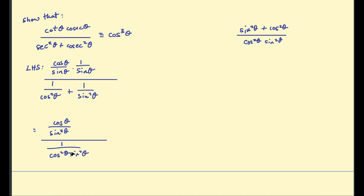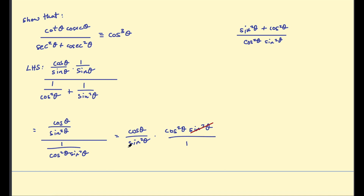Since sin²θ + cos²θ = 1, the denominator becomes 1 over (cos²θ · sin²θ). When you divide two fractions, flip the denominator and multiply. This gives (cosine θ / sin²θ) multiplied by (cos²θ · sin²θ). The sin²θ cancels, and you're left with cos × cos² = cos³θ, which is the right hand side.